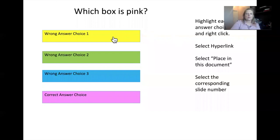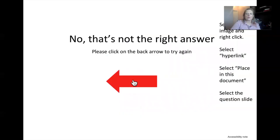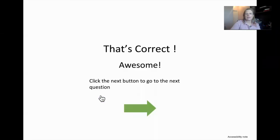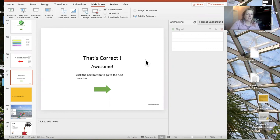Testing the hyperlinks: 'Which box is pink?' — click the wrong one: 'Nope, not right, let's go back.' Then click the correct one: 'Yes, that's correct.' You could do all kinds of cool things with this — like a scavenger hunt where kids hunt around the PowerPoint clicking on answers to academic questions, getting feedback for responding to different kinds of questions.